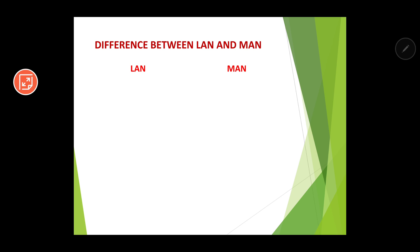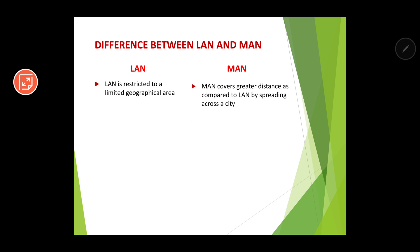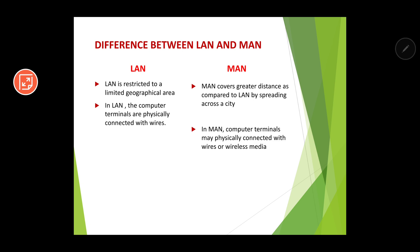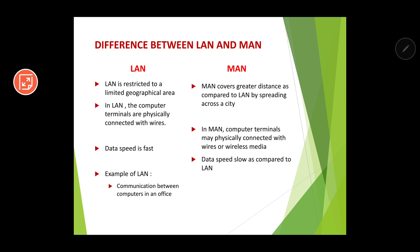Now the difference between LAN and MAN: LAN is restricted to a limited geographical area, but MAN covers greater distance by spreading across a city. In LAN, computers are physically connected with wires, but in MAN both wired and wireless media may be used. Data speed is fast in LAN but a little slower in MAN by comparison. An example of LAN is communication between computers in an office, while a cable TV network is an example of MAN.